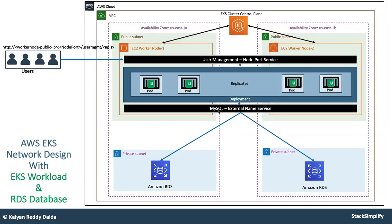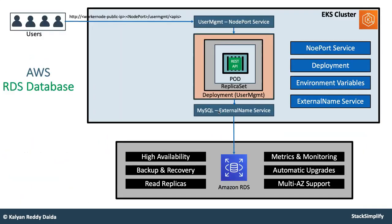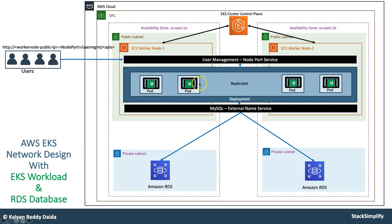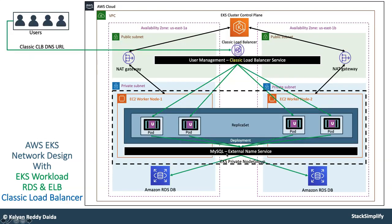Then you will move on to the load balancers section. Before moving on to that section, whatever you have implemented, its SQL and network diagram looks a certain way. We know that load balancers need to run on public subnets and workloads need to run on private subnets. So you are going to delete the worker nodes and move your workloads to private subnets, create a classic load balancer in your public subnet, and access it. Then you will also implement your classic load balancer manifest and move on to creating a network load balancer manifest and testing it.